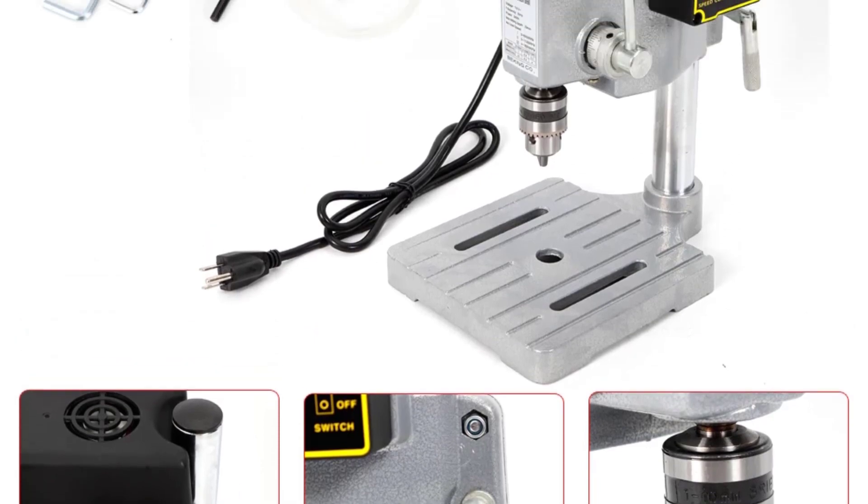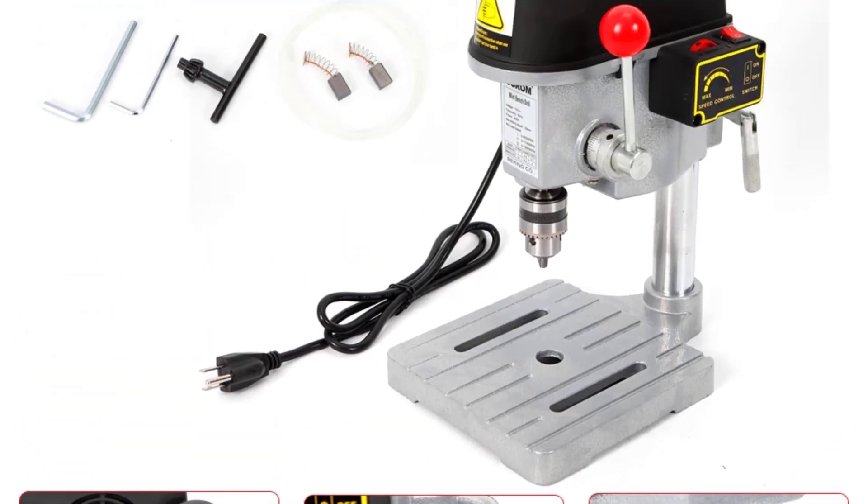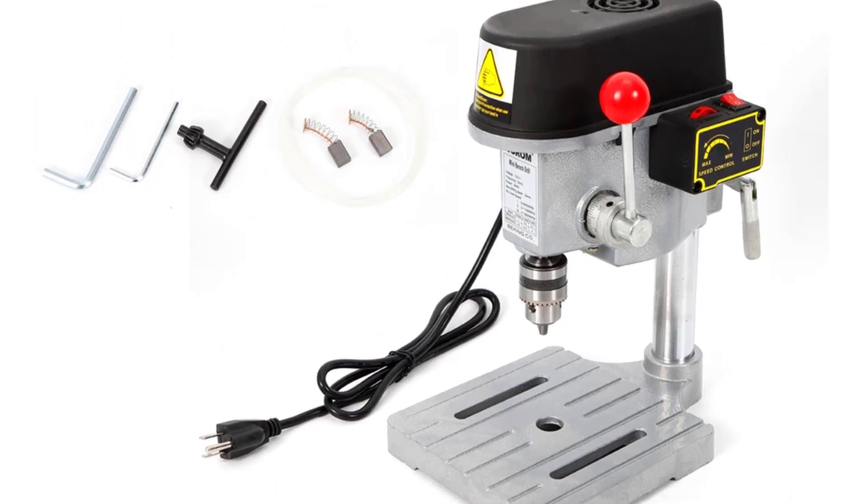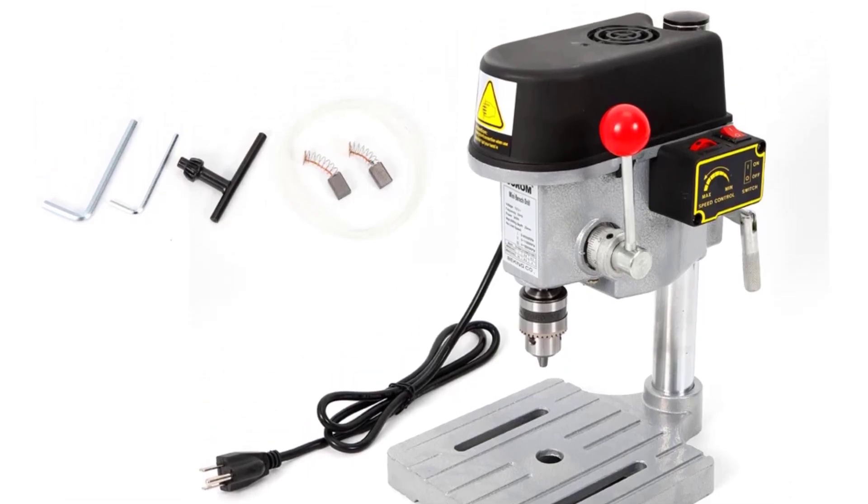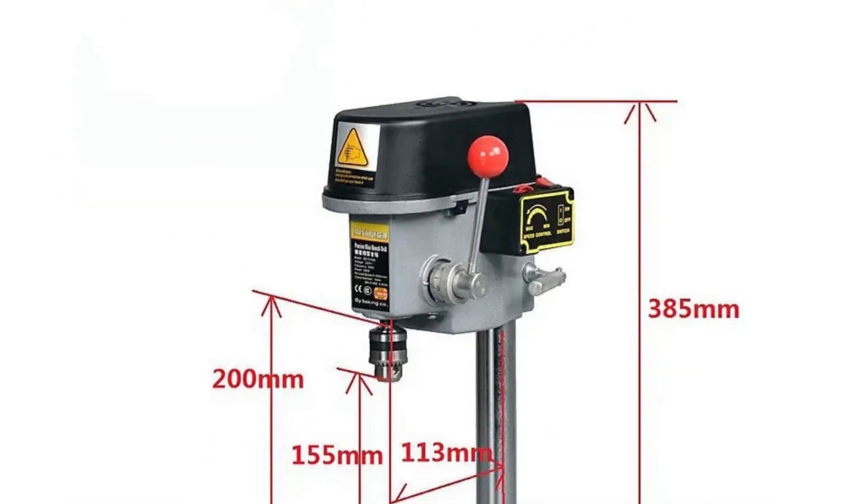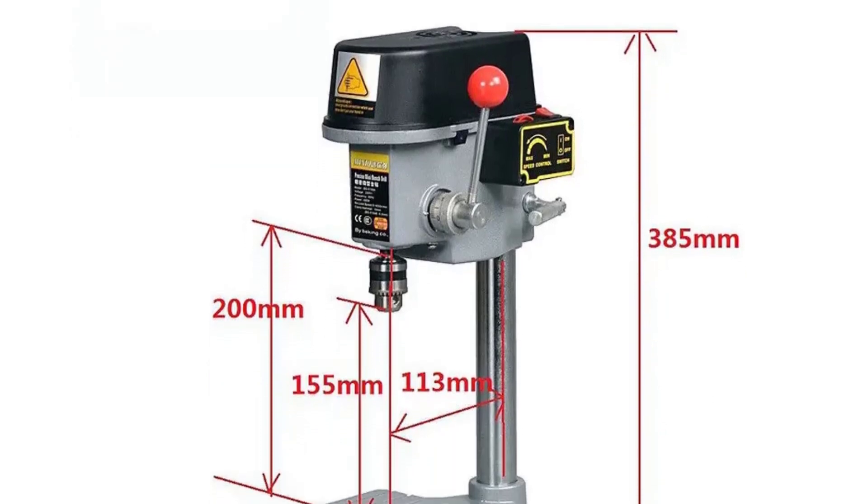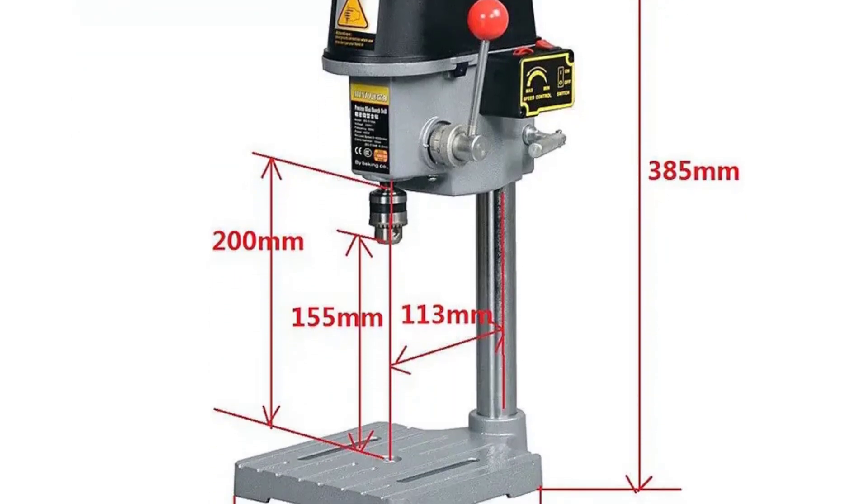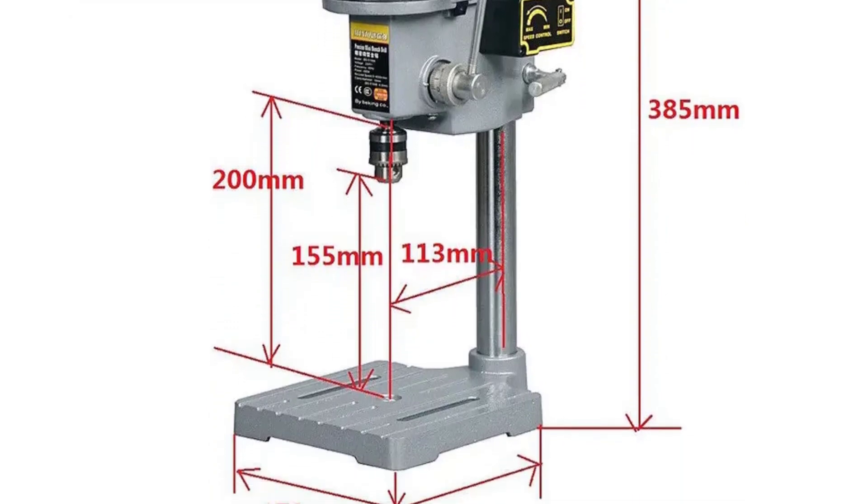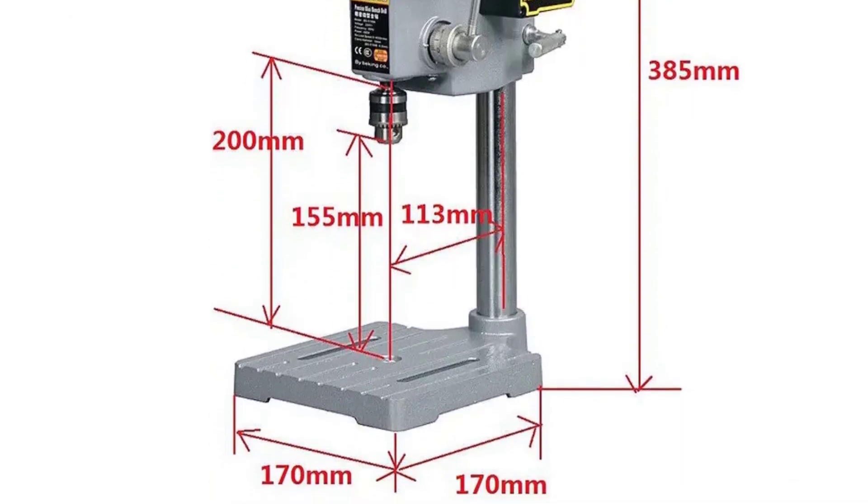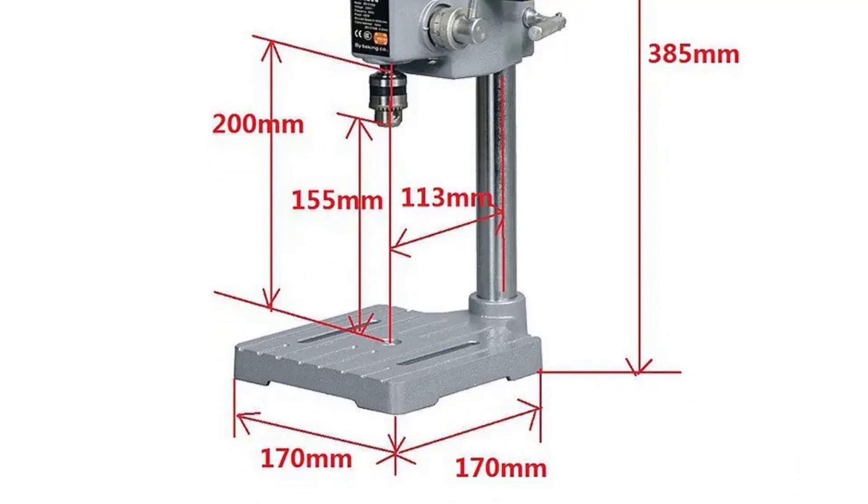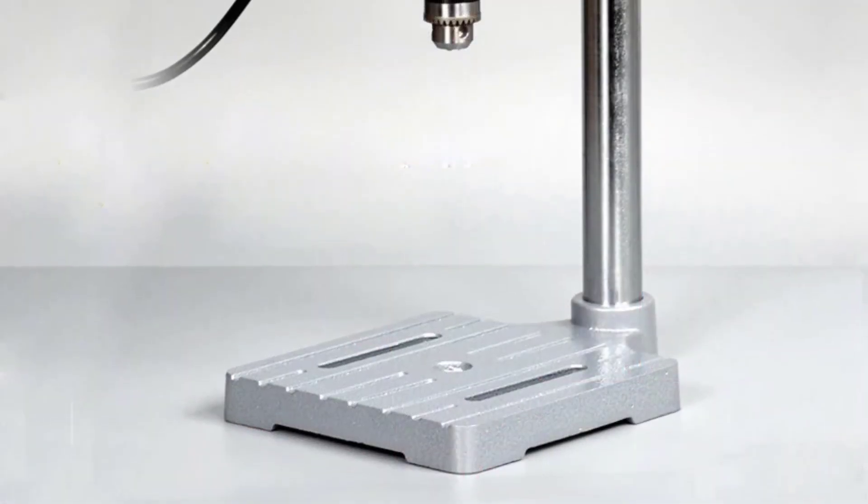With a rated input power of 340W, this drill machine delivers ample power for a variety of tasks, whether I'm working with wood, metal, or plastic. The TOOL-1 Shuo Mini Bench Drill Machine performs consistently well. The 220V AC voltage and 50Hz frequency provide a reliable and efficient power supply.